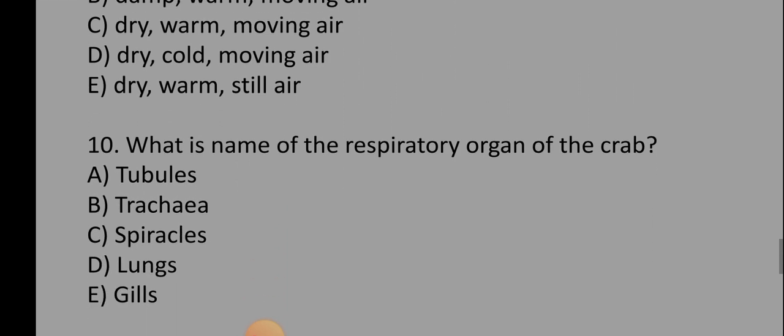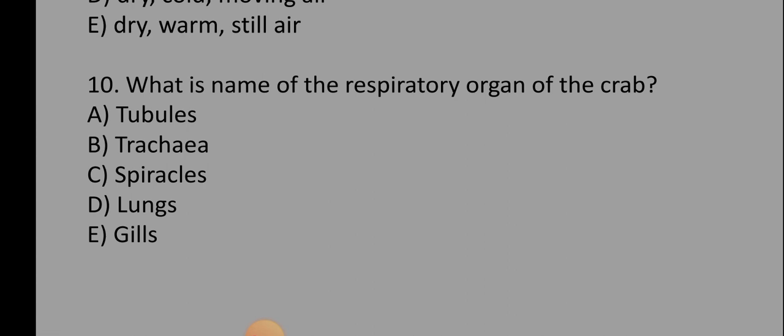Number 10 says, what is the name of the respiratory organ of the crab? A) Tubules, B) Trachea, C) Spiracles, D) Lungs, E) Gills. So the correct option is lungs. That's the correct option, D.